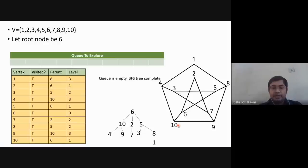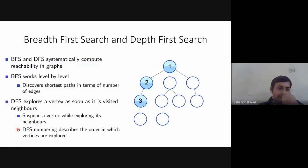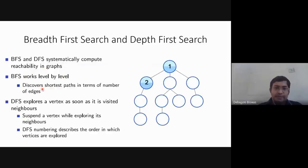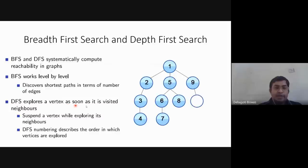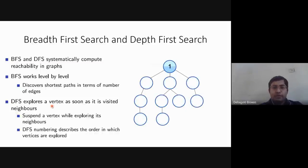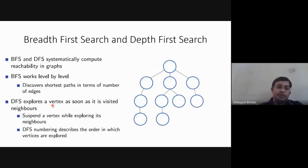BFS and DFS both systematically compute reachability. BFS works level by level and discovers the shortest path in terms of number of edges. Depth-first search explores a vertex as soon as it is visited — once it goes to a neighbor, it pushes all the way through. DFS suspends a vertex while exploring its neighbors and keeps track of the order in which vertices are explored.